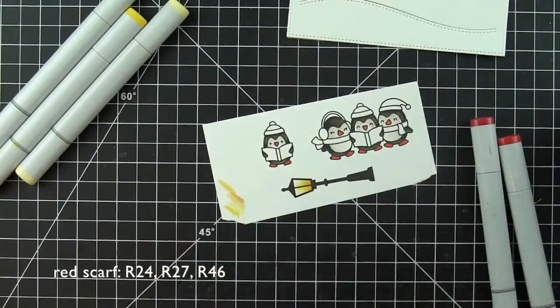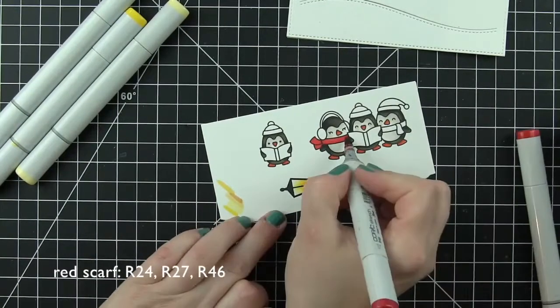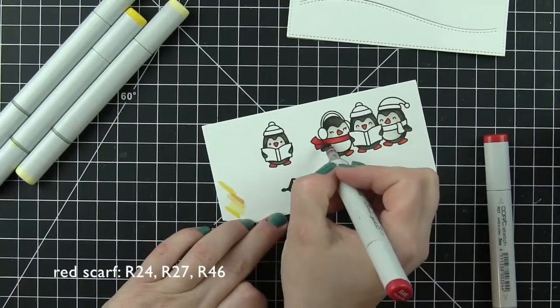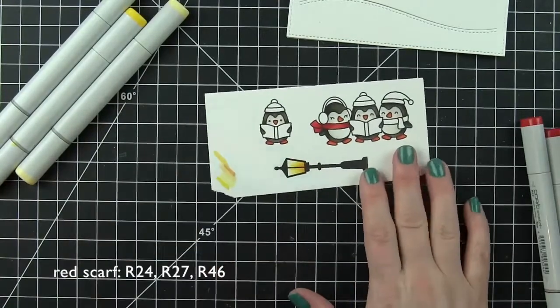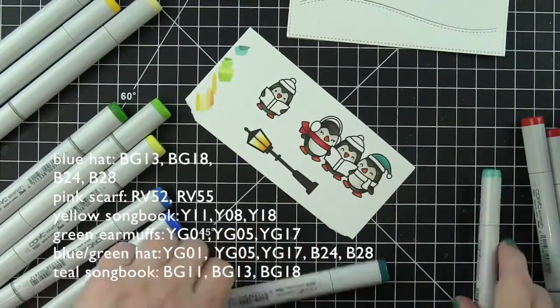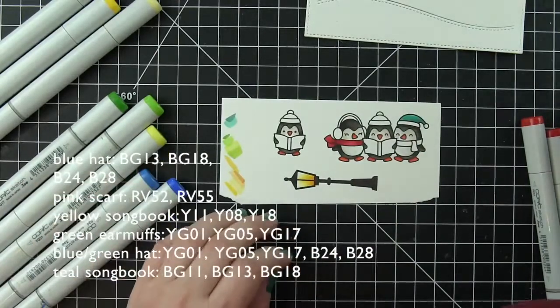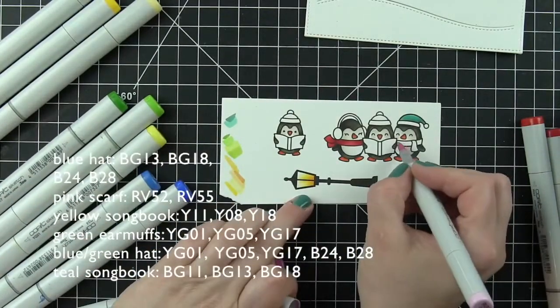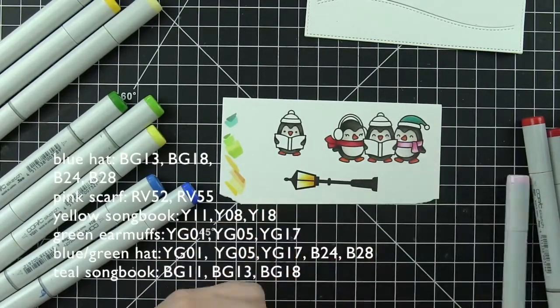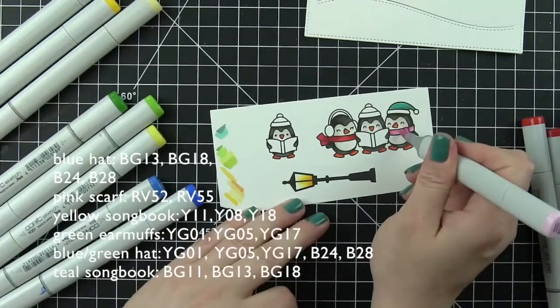Now it's time to accessorize. For the first scarf, I've got R 24, 27, and 46 to make this a red scarf. You might notice in the photos of the finished card that I did add lots of detail to these images. I kind of did some of that off screen. Always my final touch for any card is to go back and see if I want any finishing touches.